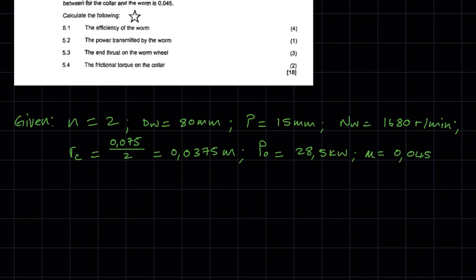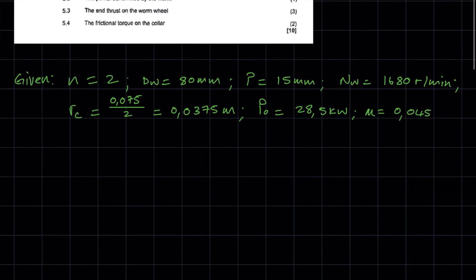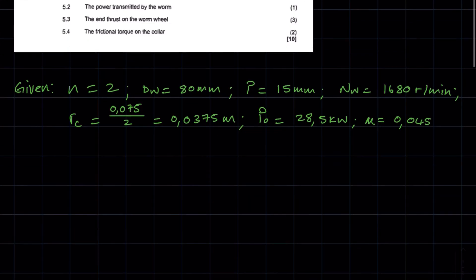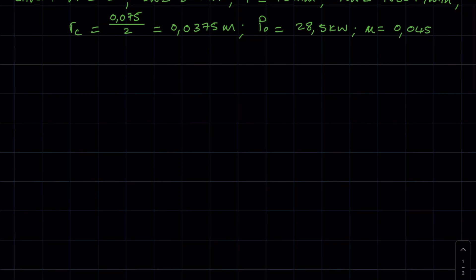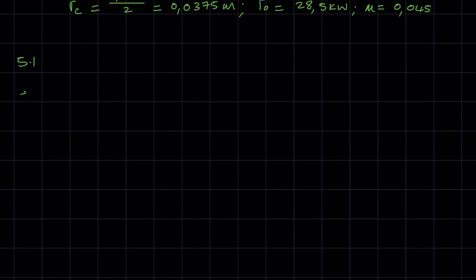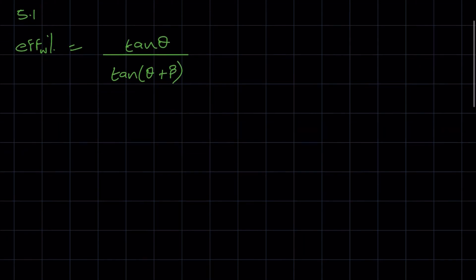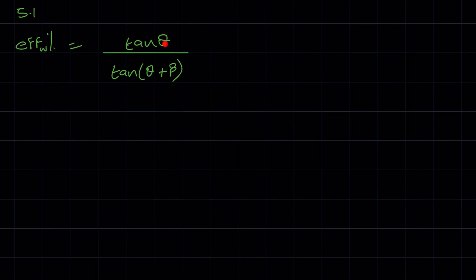Question 5.1: calculate the efficiency of the worm. There are a number of ways to calculate the efficiency — how you calculate it will be based on what you've been given. In this case, we are going to use this formula: efficiency of the worm equals tan(θ) divided by tan(θ + β), times 100. Here θ is the lead angle and β is the angle of friction.